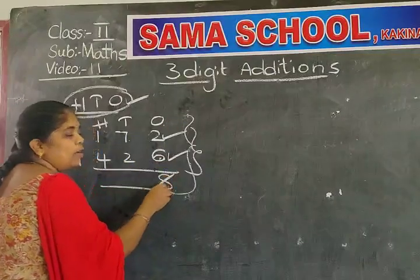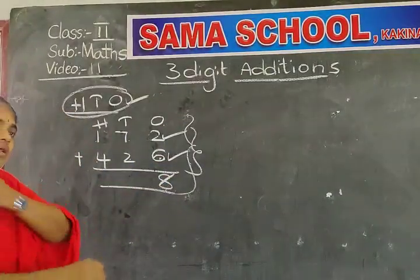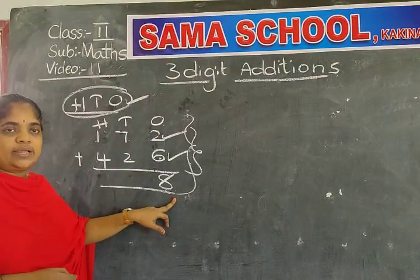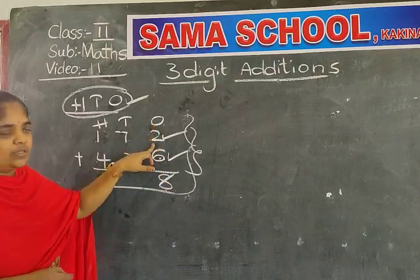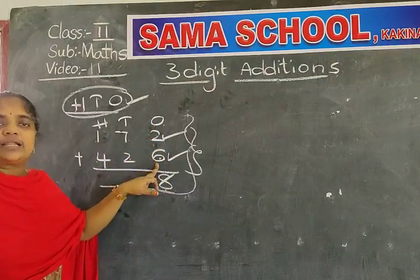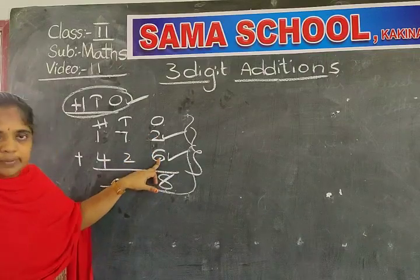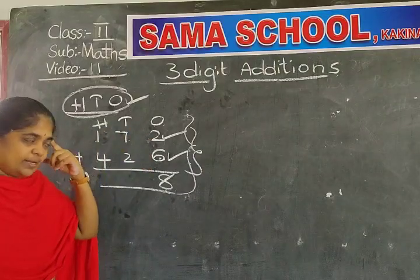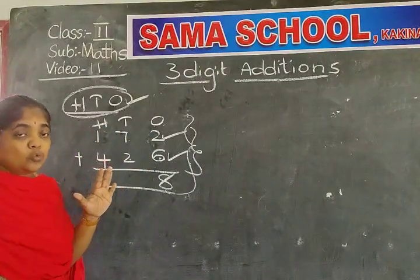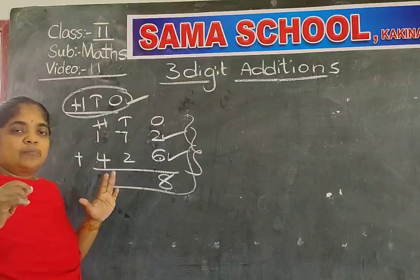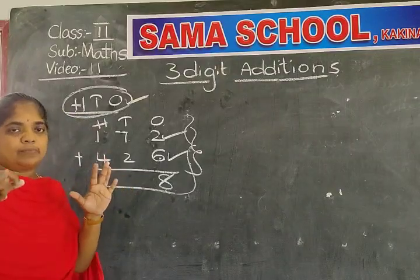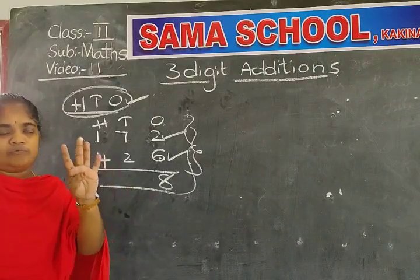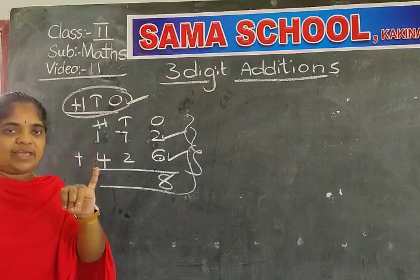Ones place answer: write the ones place answer in the ones place only. In the ones place, two is the first number, six is the second number. We keep two in the mind and take out six fingers. Two after: three, four, five, six, seven, eight. Eight.